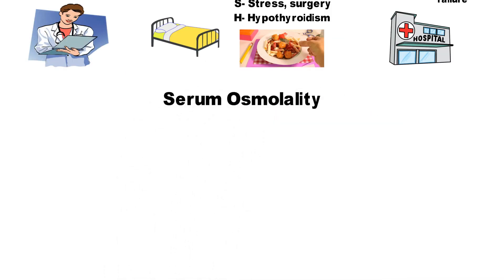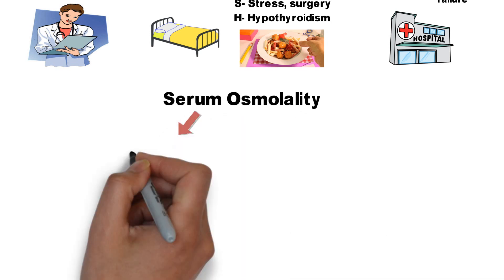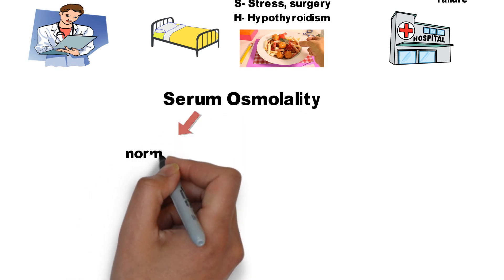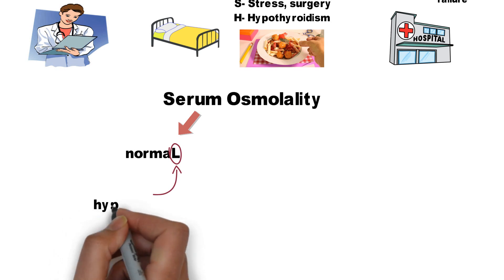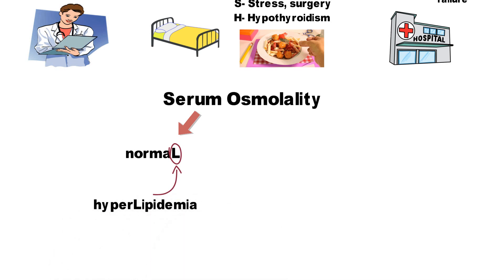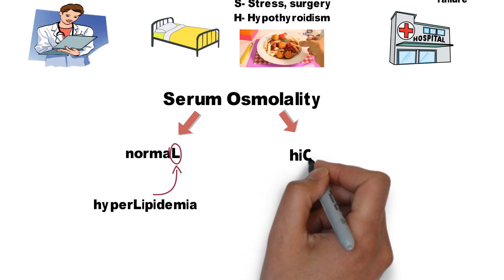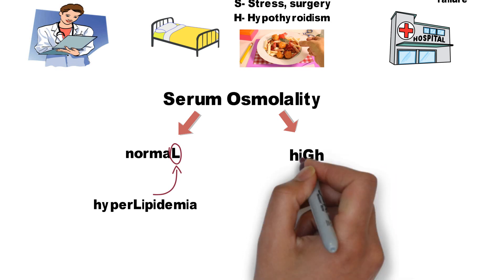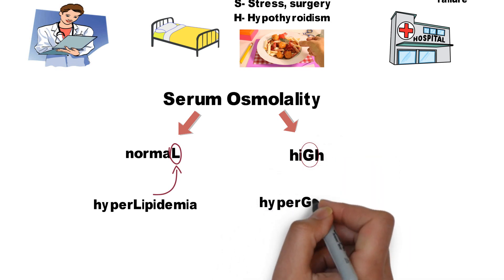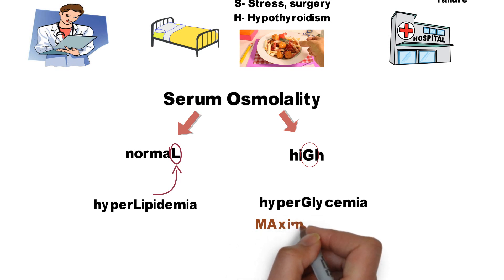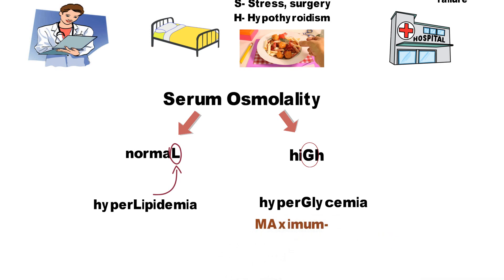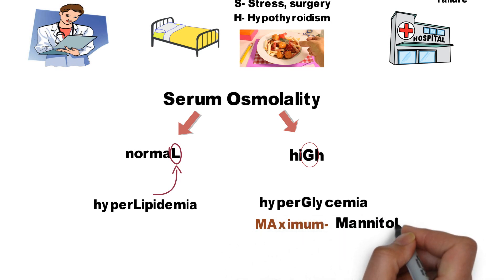If osmolality is normal, remember the letter L in 'normal' — the cause is hyperlipidemia. If osmolality is high, remember G in 'high' for hyperglycemia. 'Maximum' is another synonym for high, so you can remember it for mannitol as well.